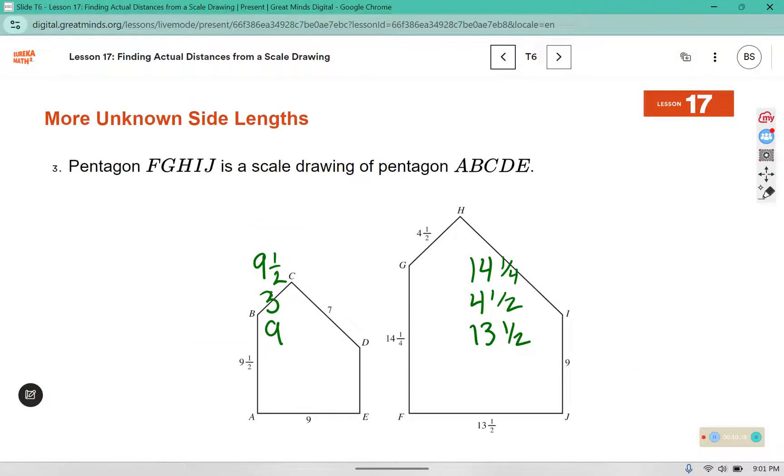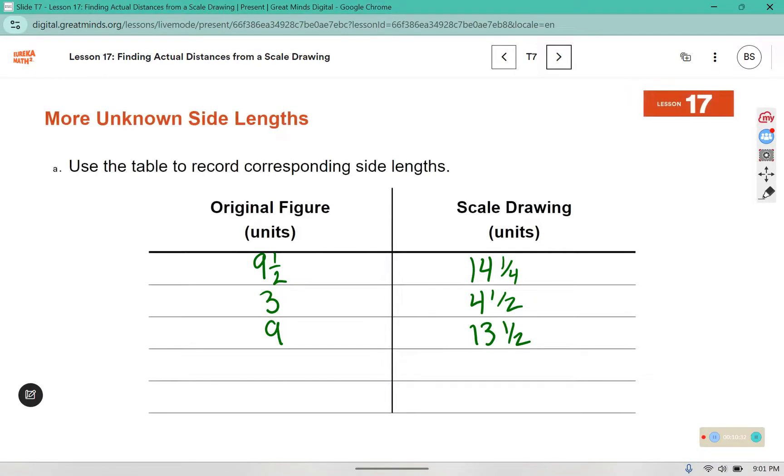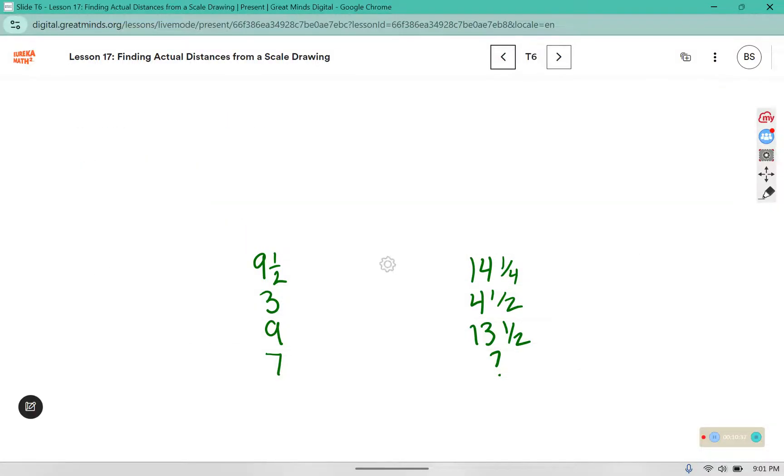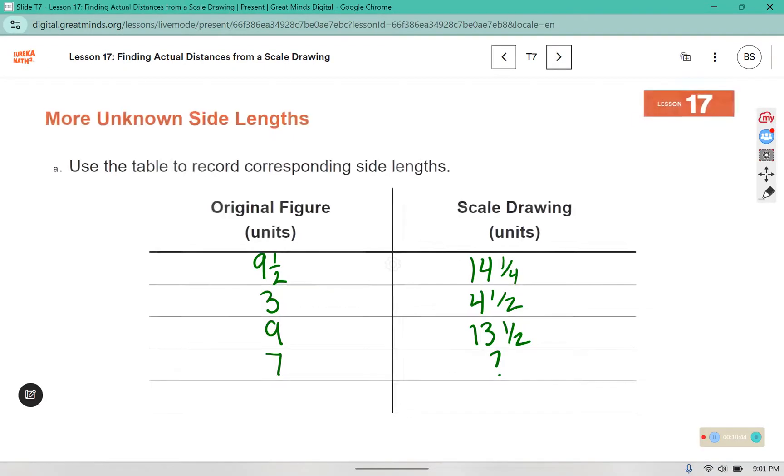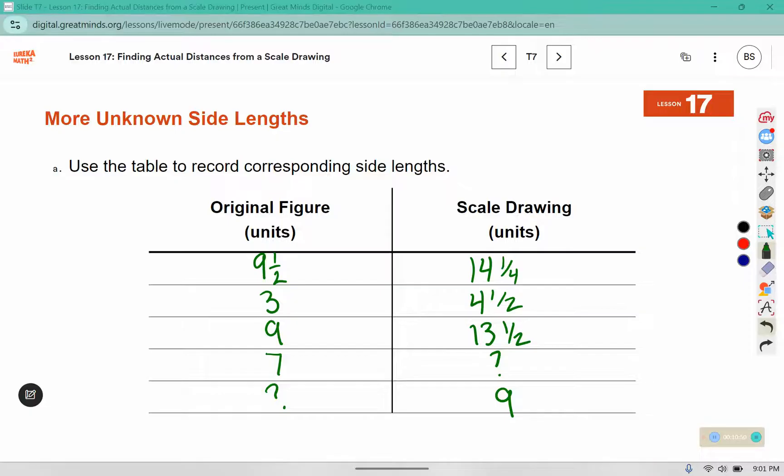The 7 doesn't have a listed side length, so we're going to write the 7 down. We don't know what goes here yet. And then we have a 9 in the scale drawing but not in the original. So we're going to put the 9 in the scale drawing section and we're going to figure out what goes there. We're going to use some of the parts b and so on to help us figure out these missing pieces.